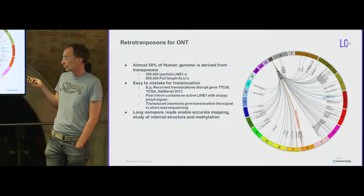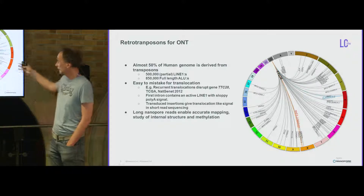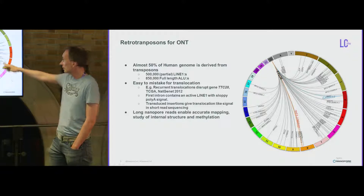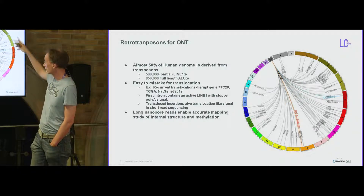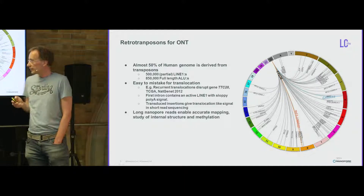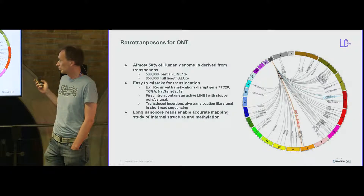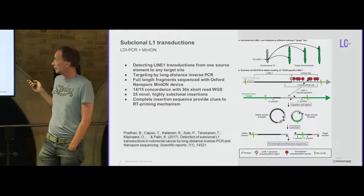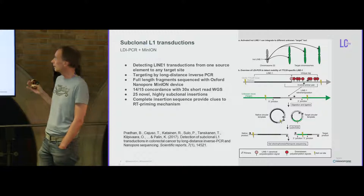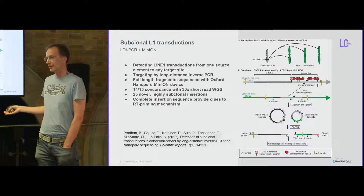We wanted to use long nanopore reads to map these elements. From our Illumina genomes, this TTC28 element is transposed to many locations across 200 genomes, but we don't know what sequence is involved, how much of the LINE-1 has been copied, or what kind of process occurred. There are different ways to incorporate the LINE-1, and the MinION was coming at the time so we wanted to use it.